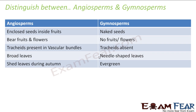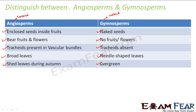Angiosperms vs gymnosperms: 'angio' means covered and 'gymno' means naked. Angiosperms have enclosed seeds inside fruits; gymnosperms have naked seeds. Angiosperms bear fruits and flowers; gymnosperms have neither. In angiosperms, tracheids are present in vascular bundles, making them hardwood with more structural strength; gymnosperms lack tracheids. Angiosperms have broader leaves; gymnosperms have needle-shaped leaves allowing them to tolerate extreme cold. Angiosperms shed leaves during autumn; gymnosperms are evergreen.